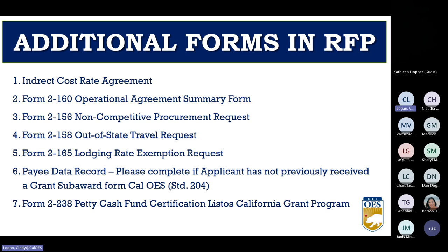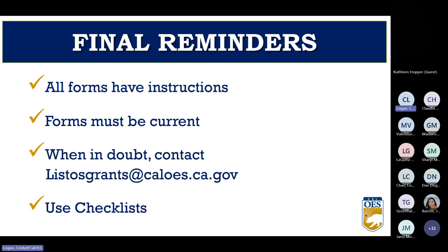Sometimes additional forms may apply — be sure to check Part 5 of your request for proposal to find out if additional forms apply for your organization. Some final things to remember: all forms have instructions; use the forms on the website for the most current versions; the checklist that comes with the RFP will tell you which forms are required. Email listosgrants@caloes.ca.gov if you have questions — we're here to help.